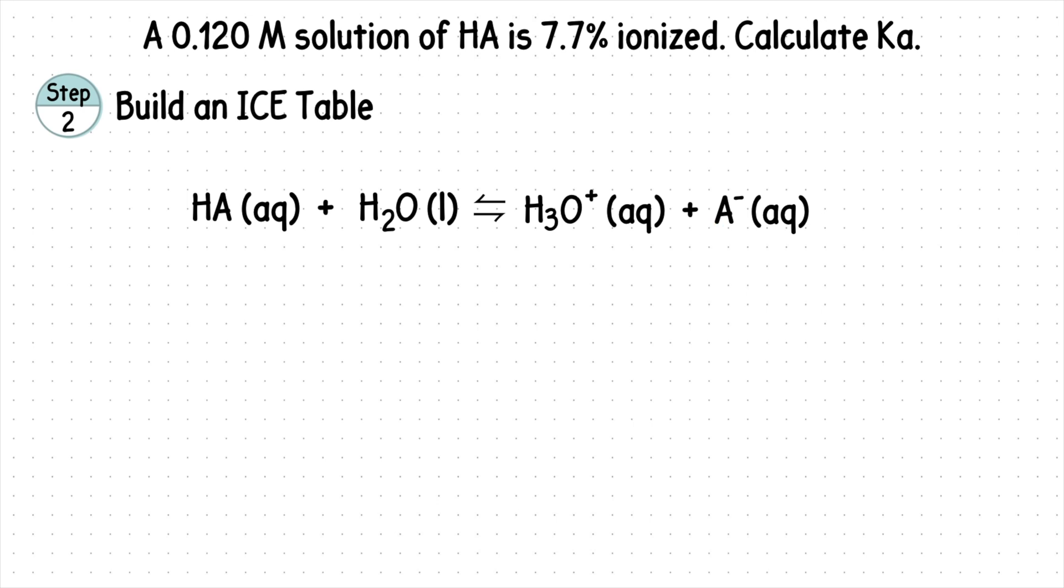We'll place the given initial acid concentration of 0.120 here. We were not given the initial concentrations of our products, so we'll label each as 0.